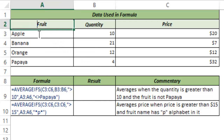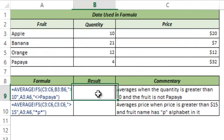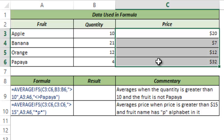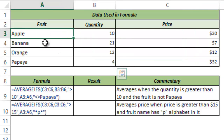I have some data here in cells A2 to C6. I have the fruit's name, its quantity, and its price. Now let me show you how to use AVERAGEIFS. Say I have a condition where I want to find the average price when the quantity is greater than 10 and the fruit is not papaya.